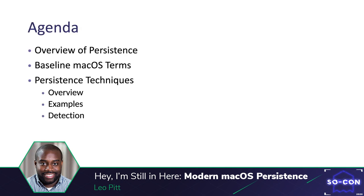So the agenda for today: I'm going to start with an overview of persistence, why we need it for Red Team ops, and a brief history of persistence on macOS. Then I'll go over a baseline of macOS terms, trying to leverage Windows equivalents to better explain macOS functionality — specifically terms used throughout this talk and all the persistence methods. For each persistence method, I'll go over an overview, example executions, and the artifacts created that can be leveraged for detection.